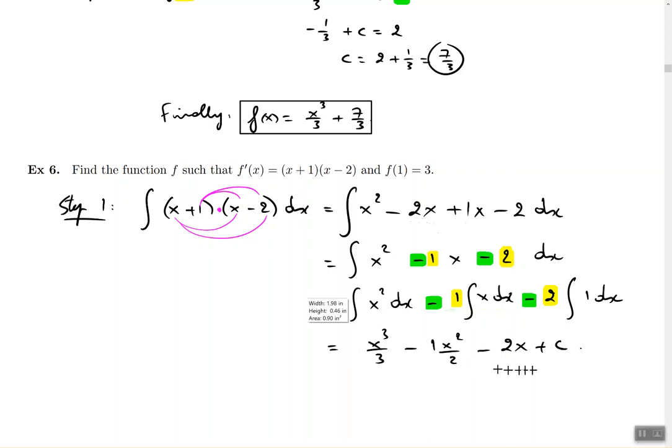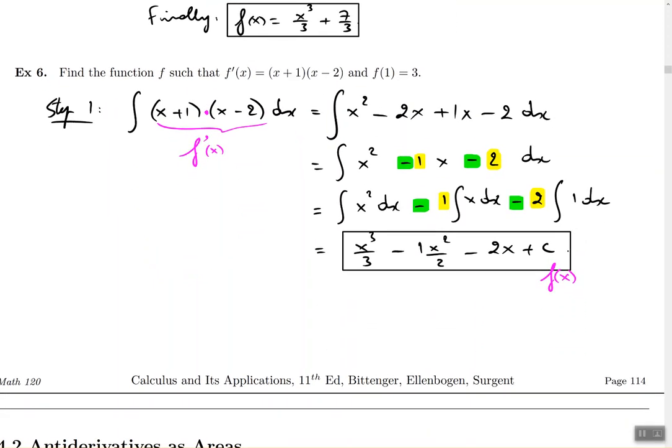So that whole thing that we just wrote is what they're calling in this problem the little f of x. And the original thing that was there on the paper is what we're calling f prime of x. So if you do the antiderivative of the derivative, you get the regular function without apostrophes, without derivatives basically. So now we are going to go ahead and do step number 2, where we can use the initial information. We know that f of 1 equals to 3. So that means if you replace all the x's with 1, you should see a 3 at the end.